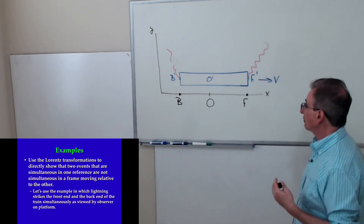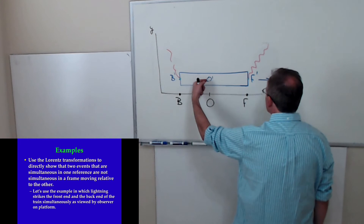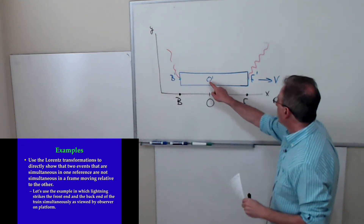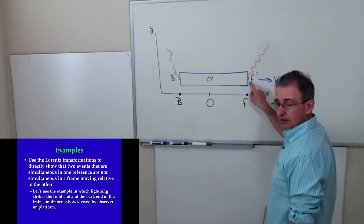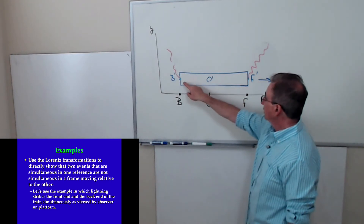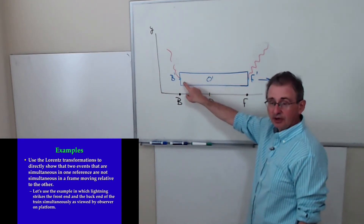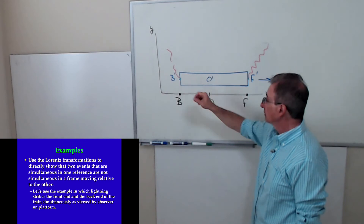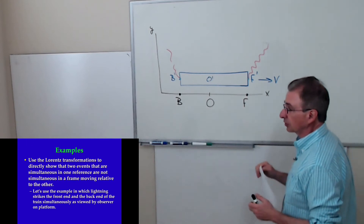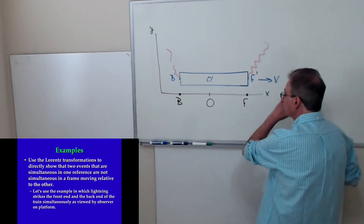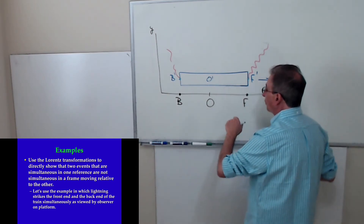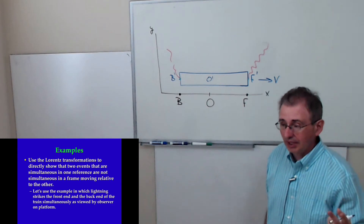We know already that if the train is going to the right, observer O prime is going to see the flash coming from the front of the train first and then the one from the back of the train. So let's use the Lorentz transformation. I'm going to write equations for the elapsed time for what happens in the front and in the back.